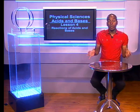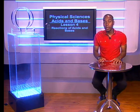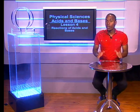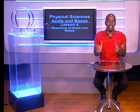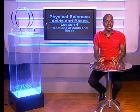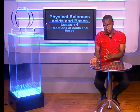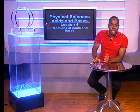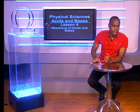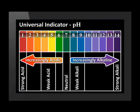Hi there, today we'll learn more about acids and bases. We know that acid-base indicators help us determine whether a substance is an acid or a base. Let us revise what we know about universal indicator. This chart shows the color range for universal indicator and tells us the exact pH of a liquid if we compare the color of the universal indicator, when placed in the solution, to the color chart.